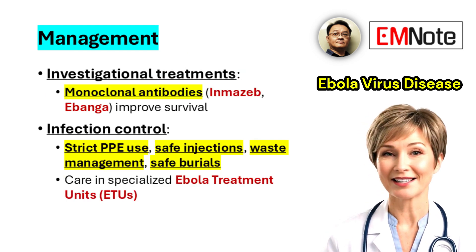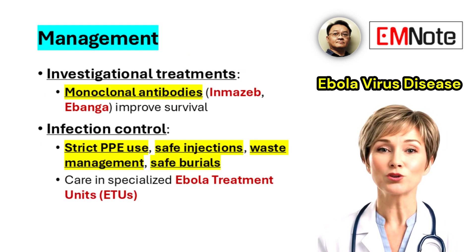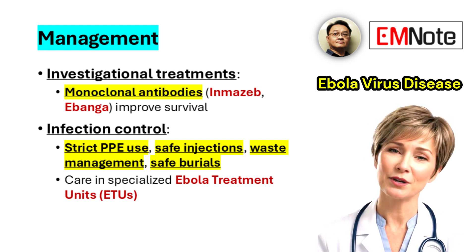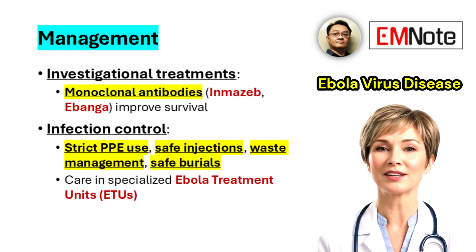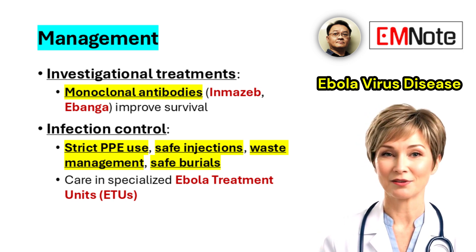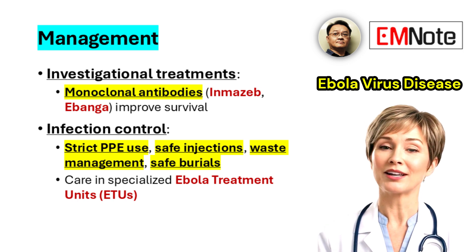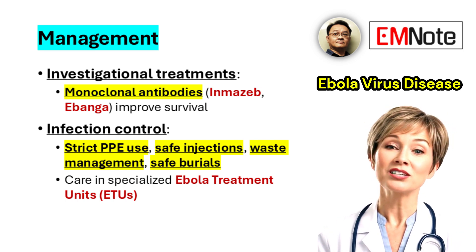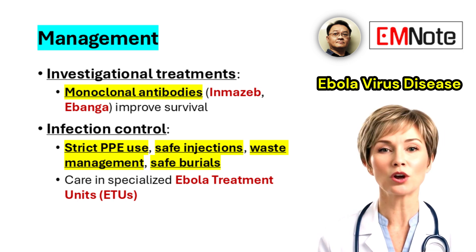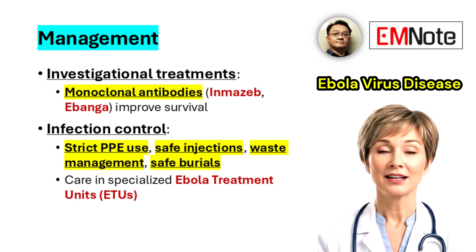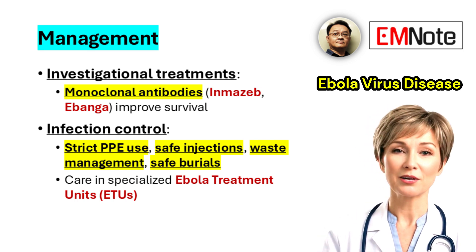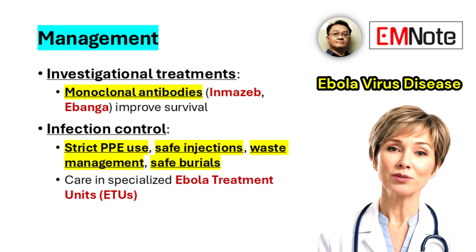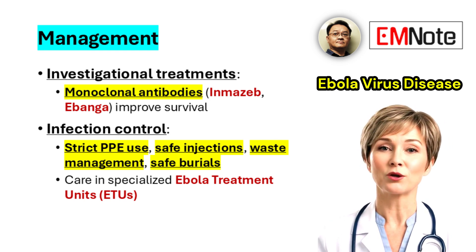Monoclonal antibody treatments such as Inmazeb and Ibanga have demonstrated improved survival in patients infected with Zaire Ebola virus. These therapies are recommended by the World Health Organization, although access can vary by outbreak setting. Strict infection prevention and control measures must be enforced, including the proper use of personal protective equipment by healthcare workers, safe injection practices, waste disposal, and safe burial procedures. Isolation in designated Ebola treatment units is mandatory.